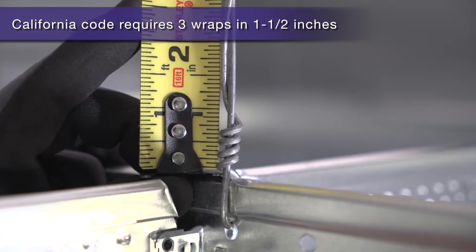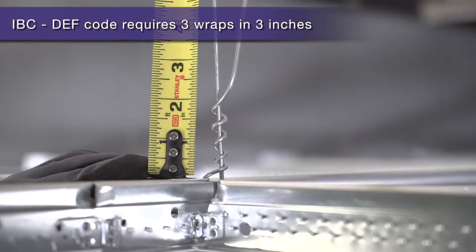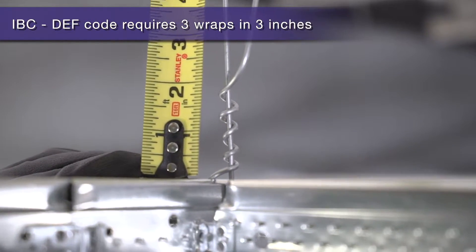IBC code gives you a little more breathing room with three to four wire wraps in three inches.